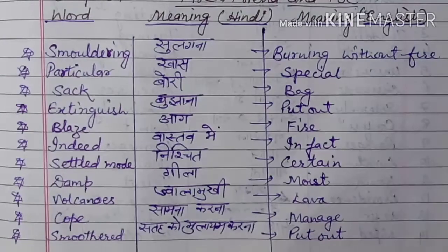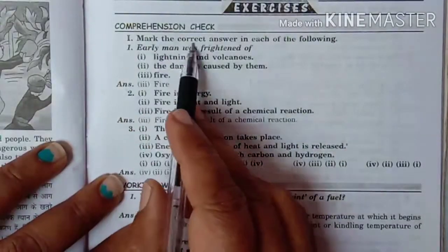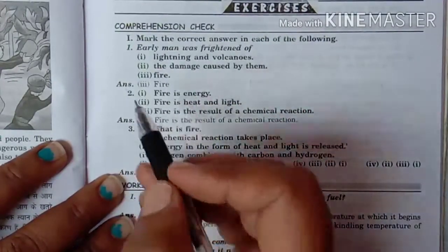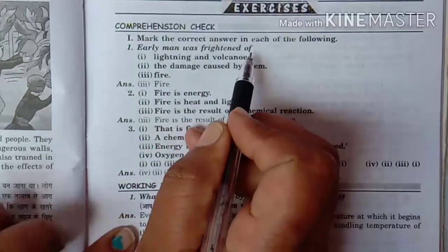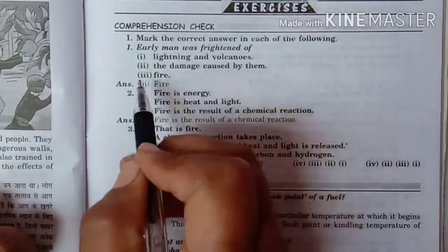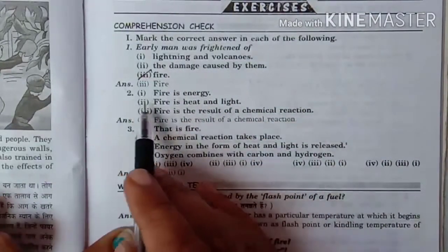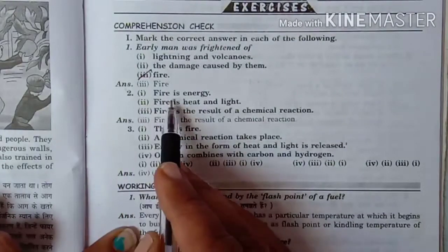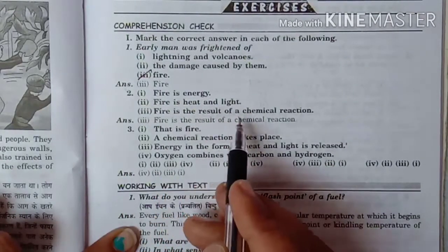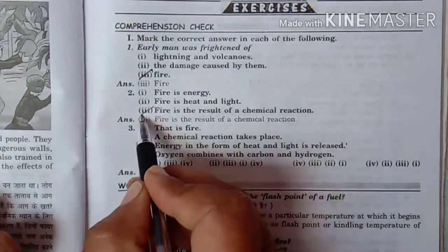Now let's look at the question answers. Mark the correct answer for each of the following. First: early man was frightened of lightning and volcanoes — the correct answer is fire. Next: fire is energy, fire is heat and light, fire is the result of a chemical reaction — the answer is: fire is the result of a chemical reaction.